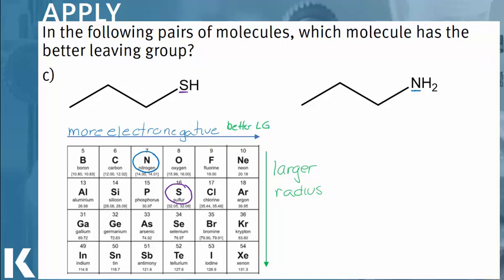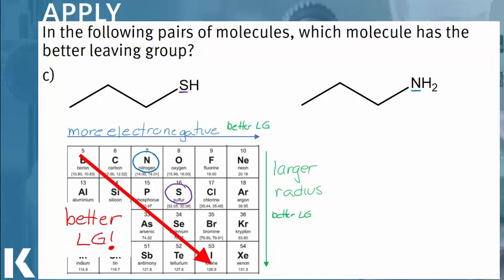Larger atoms are more stable with negative charge, so this also makes for a better leaving group. Overall, as we go from left to right and top to bottom, we will get better leaving groups. So because sulfur is both under and to the right of nitrogen on the periodic table, it would be the better leaving group.